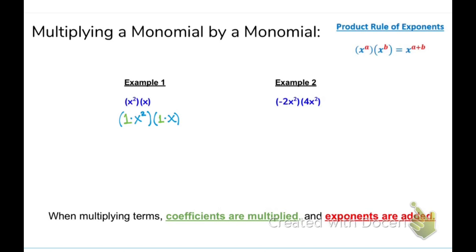I'm going to rewrite it this way for you. We're going to multiply the coefficients together: 1 times 1. Then I'm going to copy the base — the variable x — and we're going to add the exponents: 2 plus 1, because x to the first power has an invisible 1. So x squared times x equals 1x to the third power, which is the same as just x to the third power. Perfect.